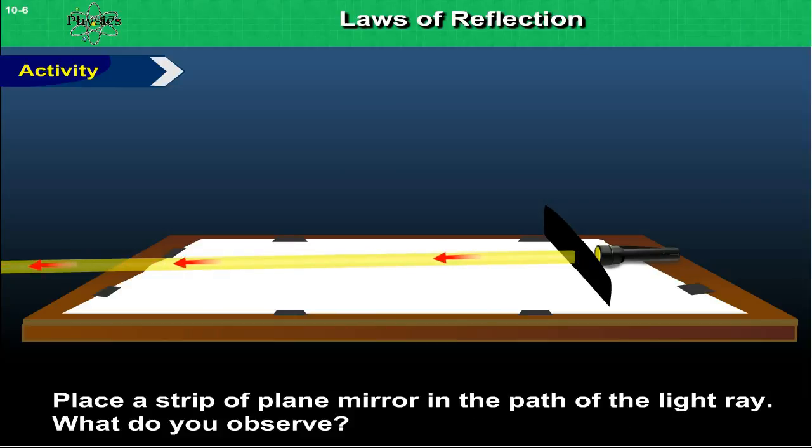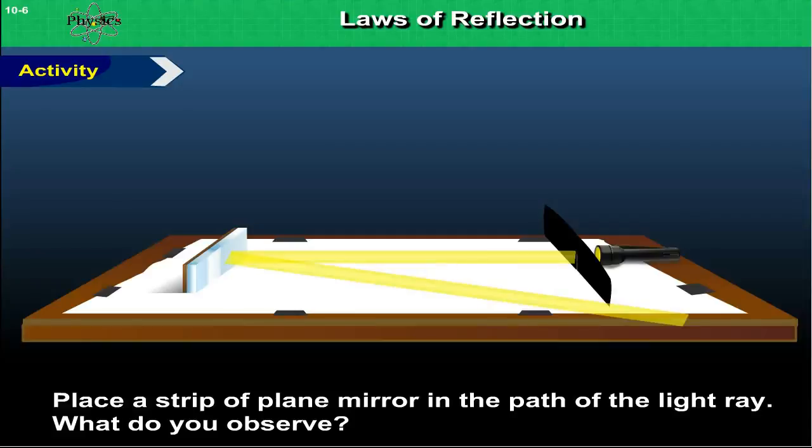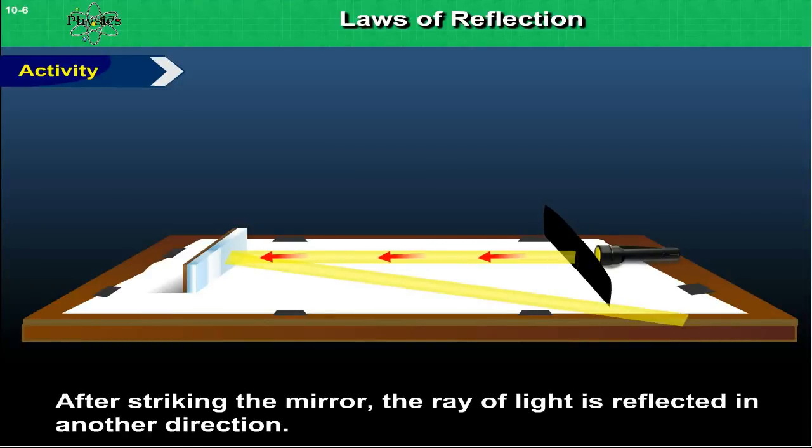Now place a strip of plain mirror in the path of the light ray. What do you observe? After striking the mirror, the ray of light is reflected in another direction.